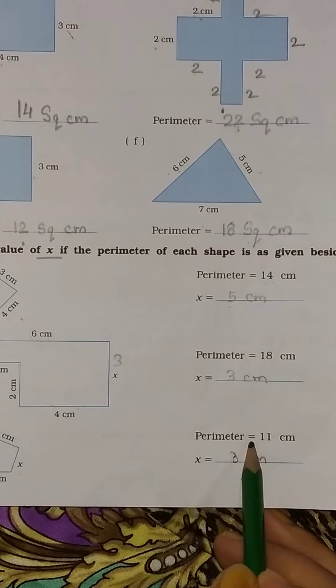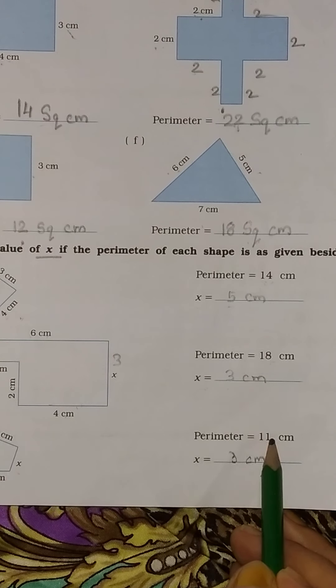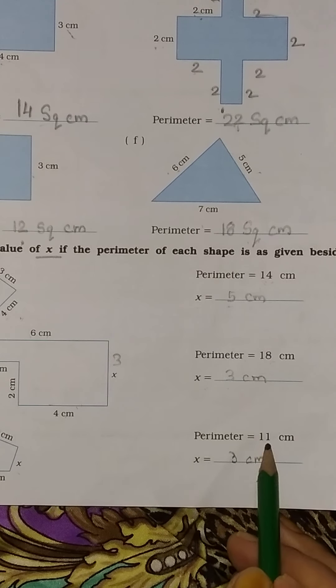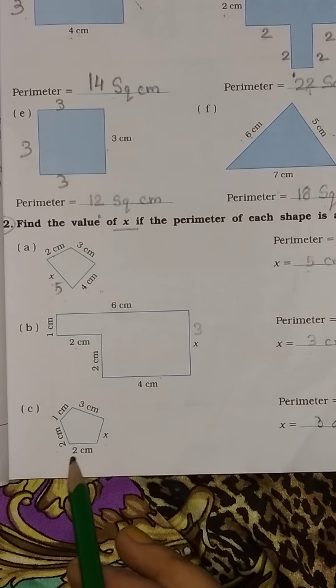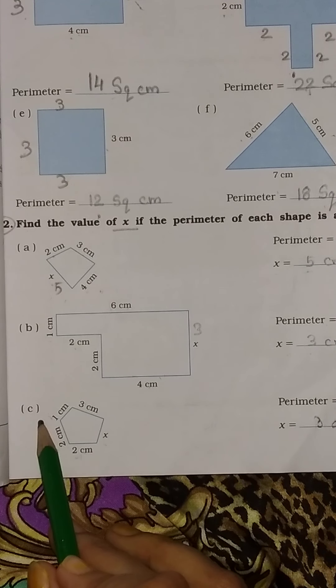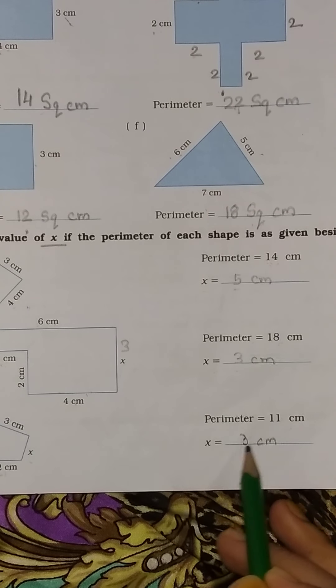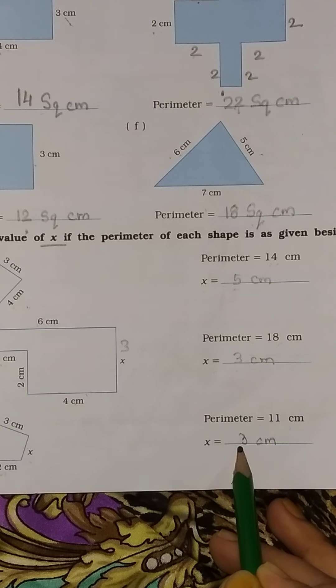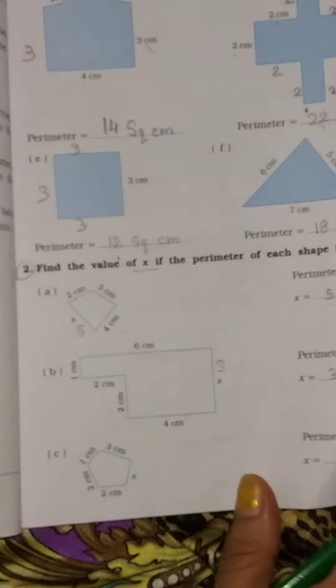The total perimeter is 11 cm. So when we subtract, 11 minus 8, we will get 3 cm. This is the measurement.